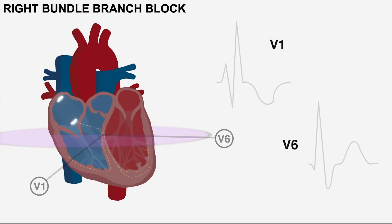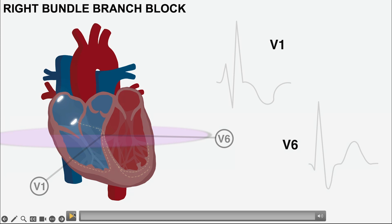Let's slow it down and discuss the various stages of a right bundle branch block. In right bundle branch block, the depolarization goes from the SA node across the atria and then pauses at the AV node as per usual. The depolarization then goes from left to right along the bundle of His, which gives a slight upwards deflection in V1.